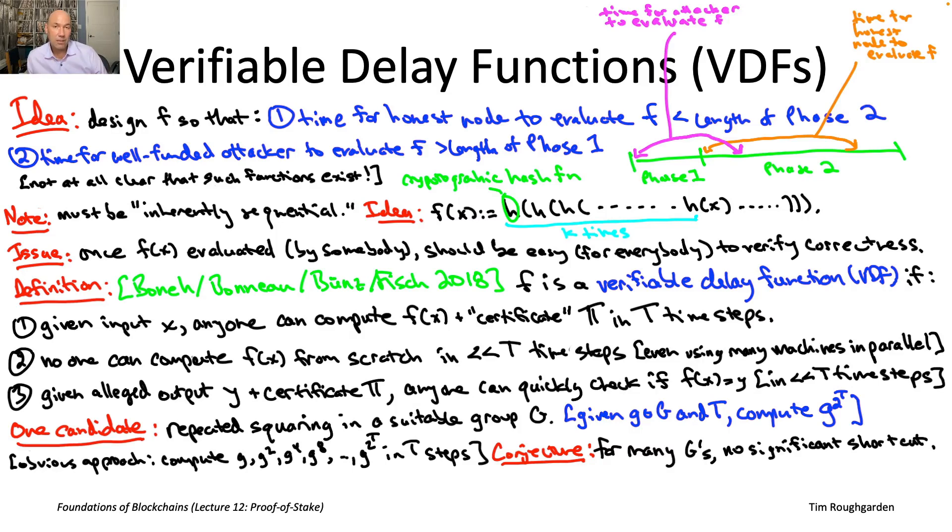The only way you're going to get that second property of the VDF definition is if, in fact, there's no significant shortcut over repeated squaring.